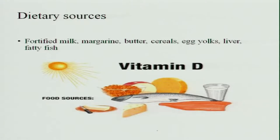The various dietary sources of vitamin D include sunlight as the main source. From food sources, you have fortified milk — milk is fortified with vitamin D — then margarine, butter, cereals, egg yolk, liver, and fatty fish. Milk and margarine are fortified with vitamin D so that the body gets a sufficient amount.